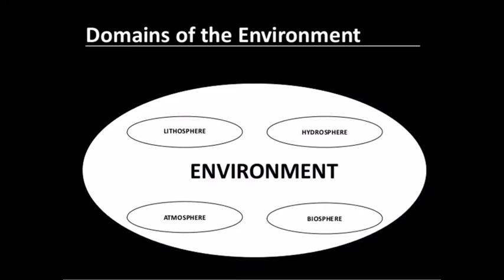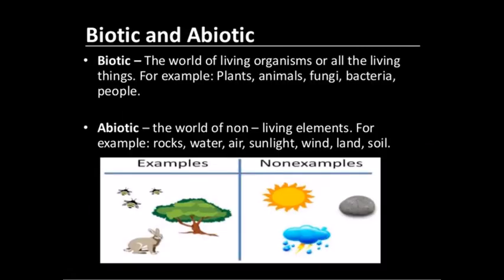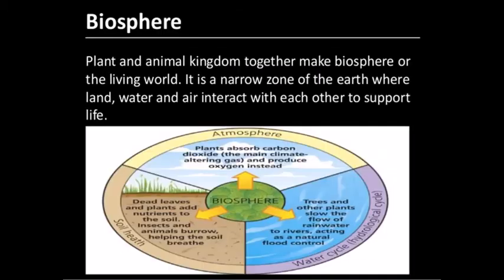So the domains of the environment are lithosphere, hydrosphere, atmosphere and biosphere. The four domains are categorized in two ways: living things and non-living things. Living things are known as the biotic domain and non-living things are known as the abiotic domain. The plant and animal kingdoms together make the biosphere — the living world — in a narrow zone of the earth where land, water and air interact with each other to support life.